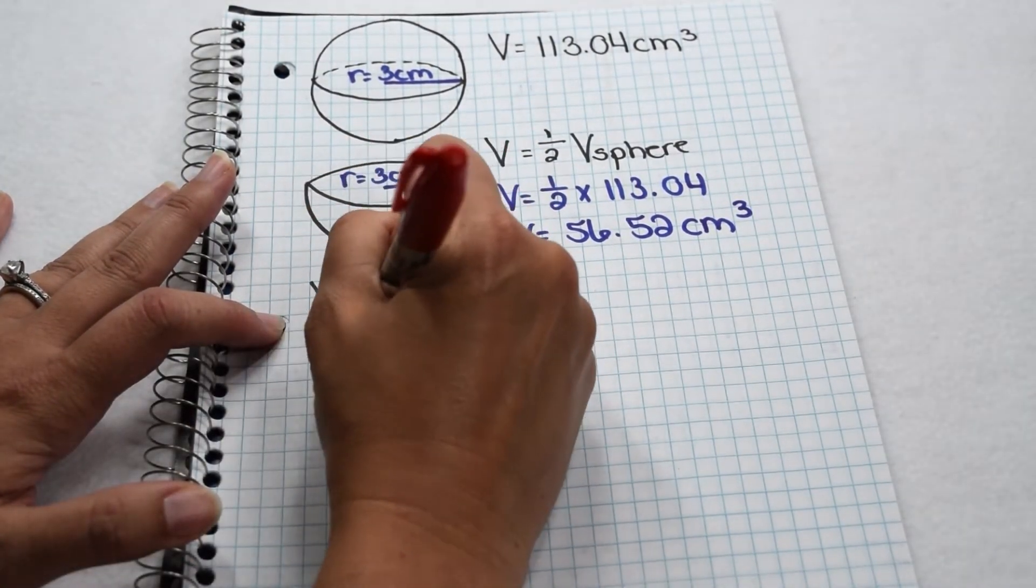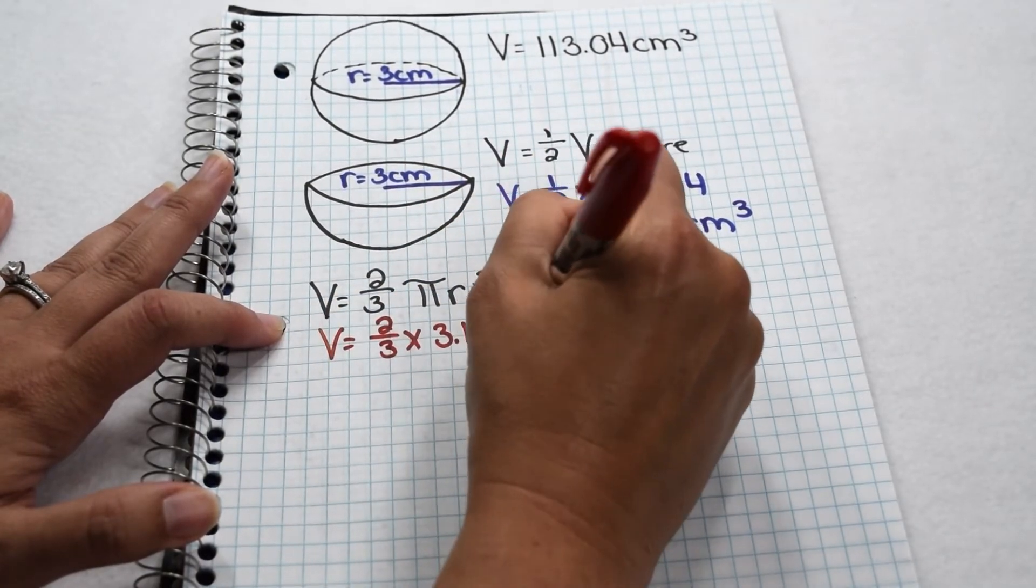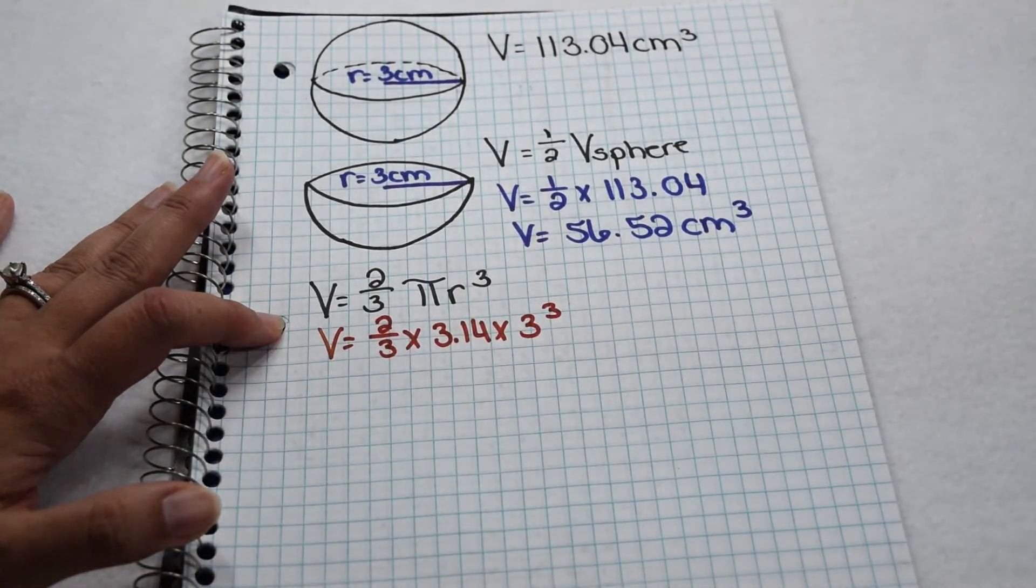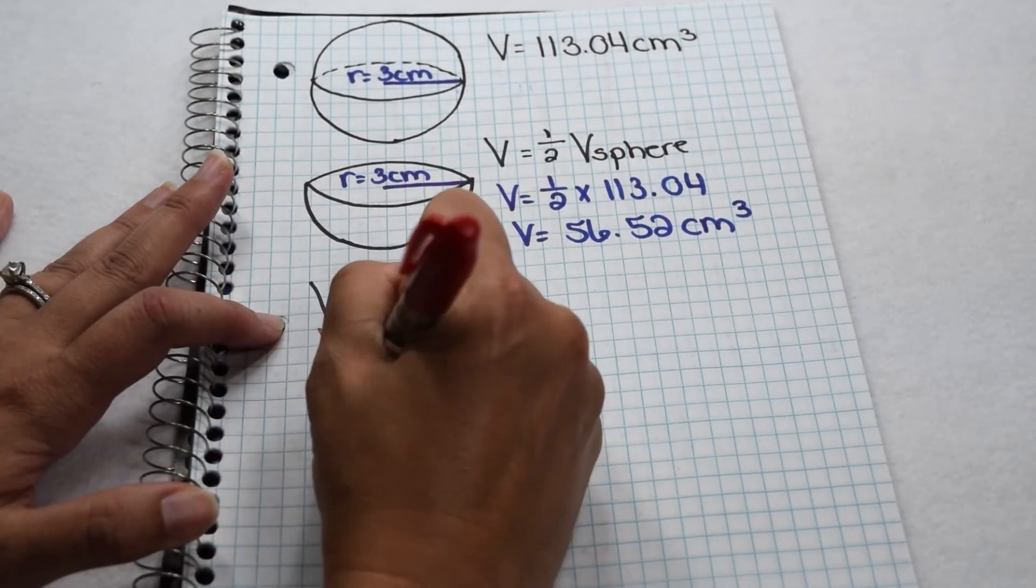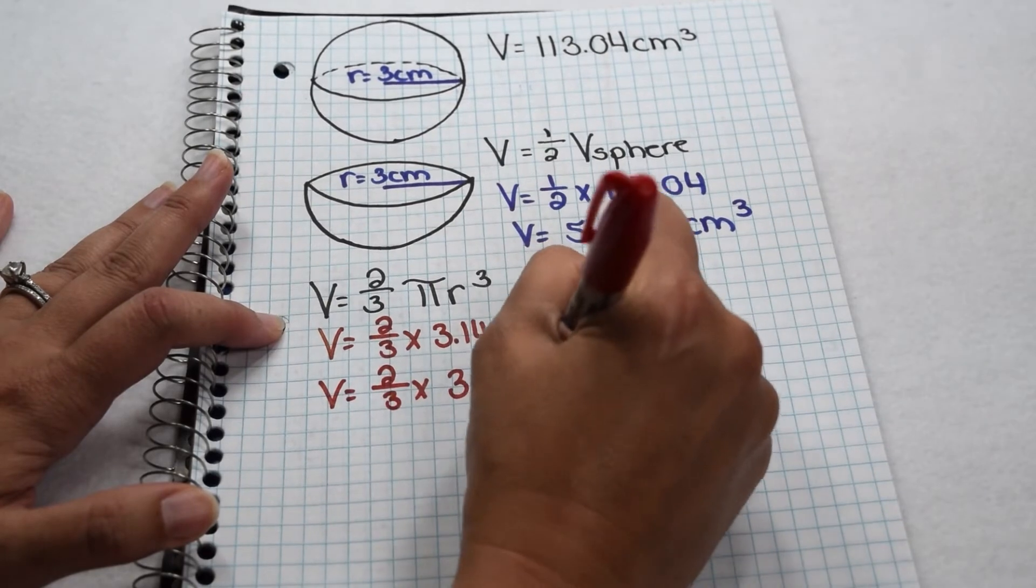Let's test our equation to see if we get the same result. Volume is going to be two-thirds times 3.14 times radius cubed, or 3.14 times three cubed. Three cubed is worth 27, so that means we have two-thirds times 3.14 times 27.